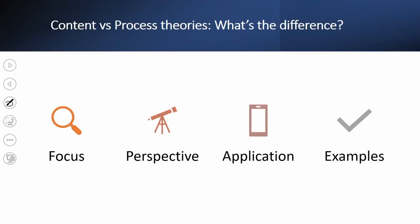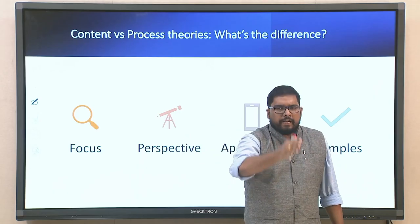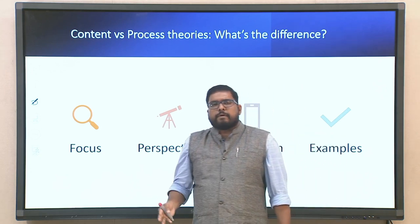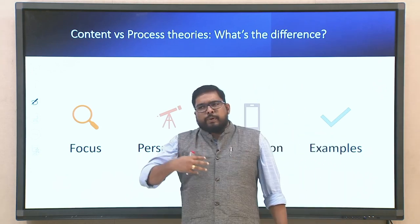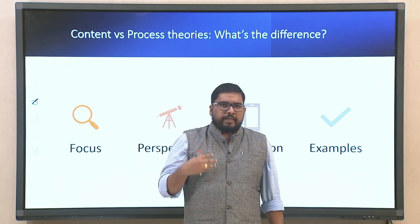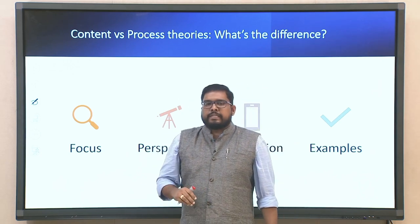The difference between content and process theories is mainly with respect to focus: is the focus on static needs, or is it dynamically changing? The perspective and application of the motivational theory in the relevant field also differs. These aspects differentiate content versus process theories, and we will explain certain theories in detail.